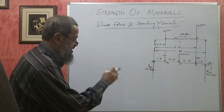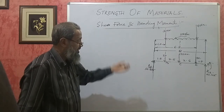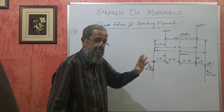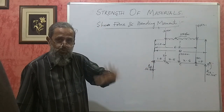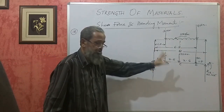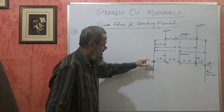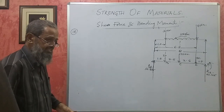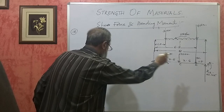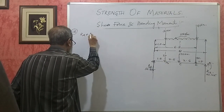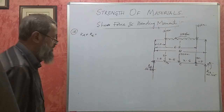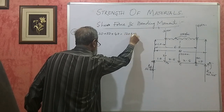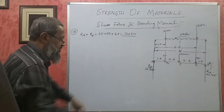For any simply supported beam, first find the two reactions. For the beam to be in equilibrium: the sum of upward forces must equal the sum of downward forces. Applying this: Ra plus Re equals 30 plus 50 plus 40, which works out to 120 kilonewton.